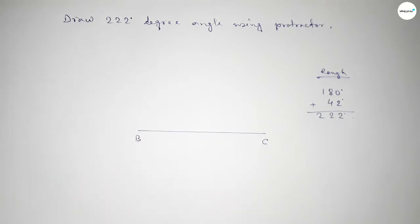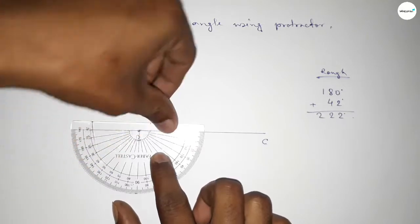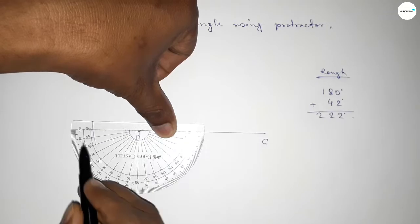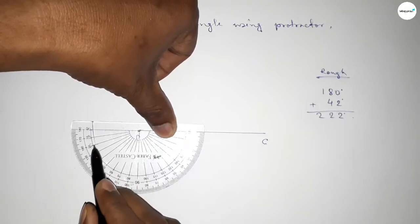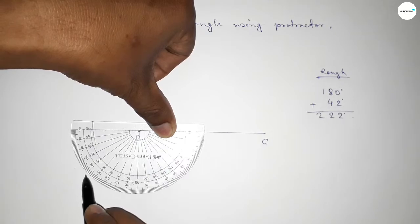Now putting the protractor on the point B again by this way and counting 42 degree angle. So this is 180 degree, again this is starting angle 0, 10, 20, 30, 40, 41, 42. So this is 42 degrees.